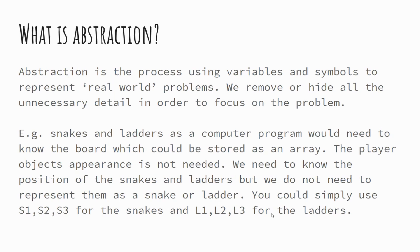Let's look at what abstraction is. In essence, abstraction is the process of using variables and symbols to represent real world problems, and hiding or removing all of the unnecessary detail within our problem. For example, train maps — you'll just have a straight line with a series of dots representing the direction of the train and the stops it will stop at. It's not relevant how far apart those dots are, or if there's any curvature in the track, because the train will ultimately just start and stop at each of those stations.